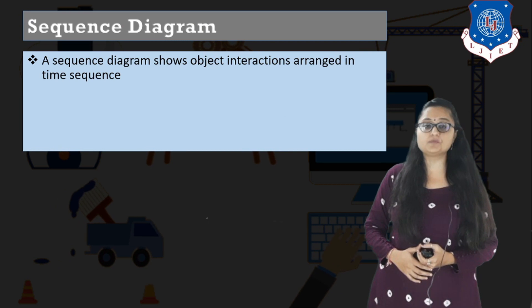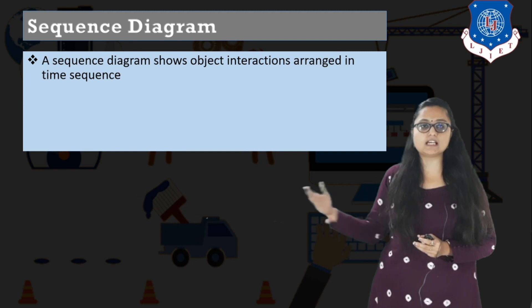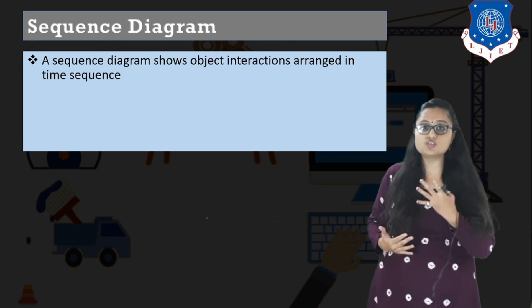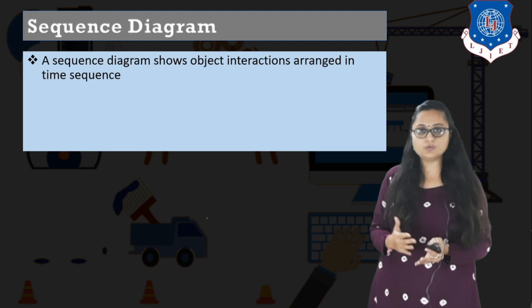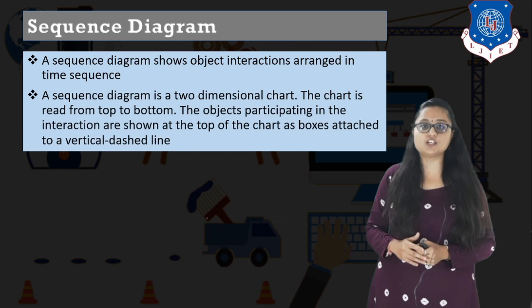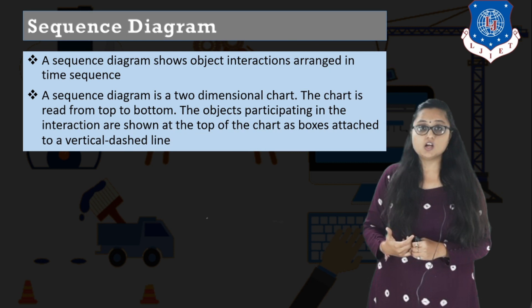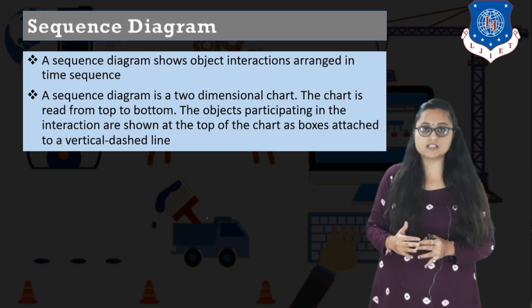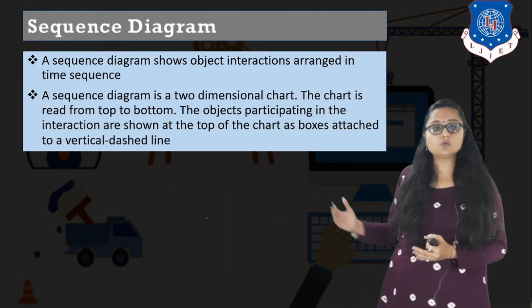What do you mean by sequence diagram? Sequence diagram basically shows the object interaction arranged in the time sequence. So sequence diagram is similar to activity diagram — it shows the activities performed by the objects and the interaction between two objects, but against a time sequence. The basic importance of sequence diagram, or where the name arrives from, is the time sequence it is following. It needs to follow a proper logical timing order.